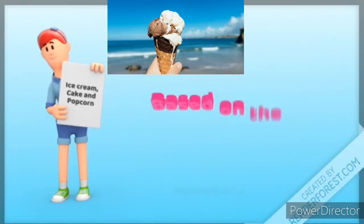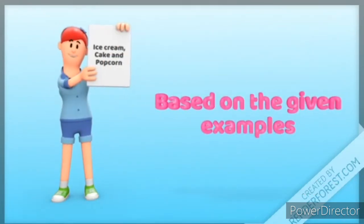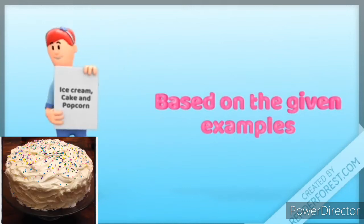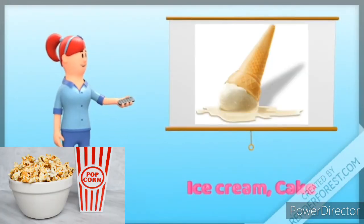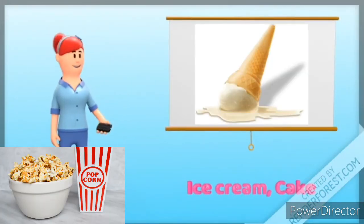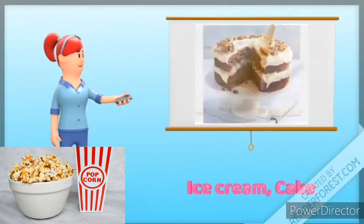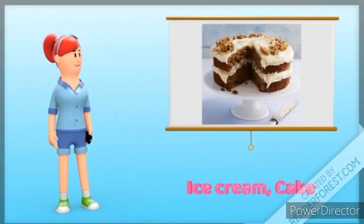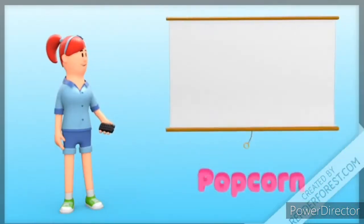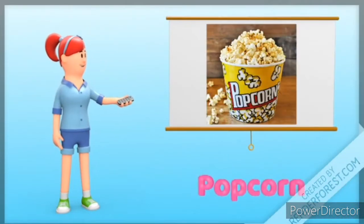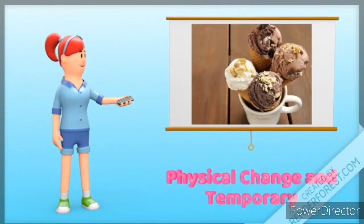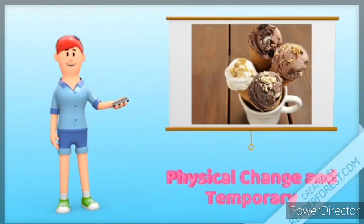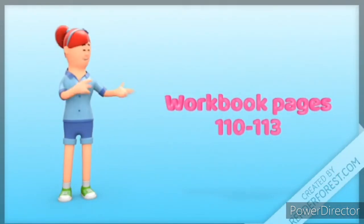Based on the examples given — ice cream, cake, and popcorn — the only sample that underwent a physical change is ice cream, and the change is a temporary change because it can be undone or reversed. That ends our lesson.